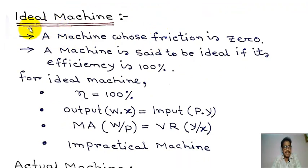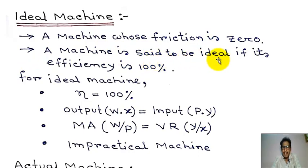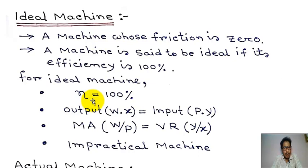First, what is an ideal machine? A machine whose friction is zero is called an ideal machine. A machine is said to be ideal if its efficiency is 100%. For ideal machines, efficiency equals 100%, and output W×x equals input P×y.